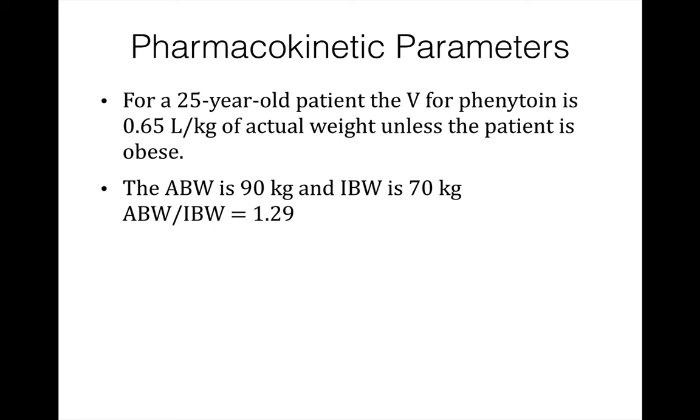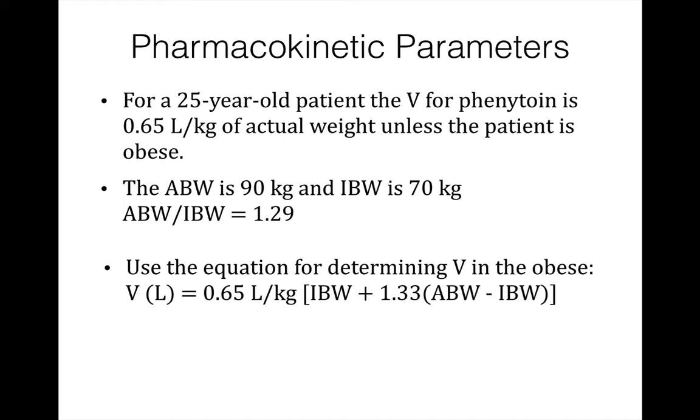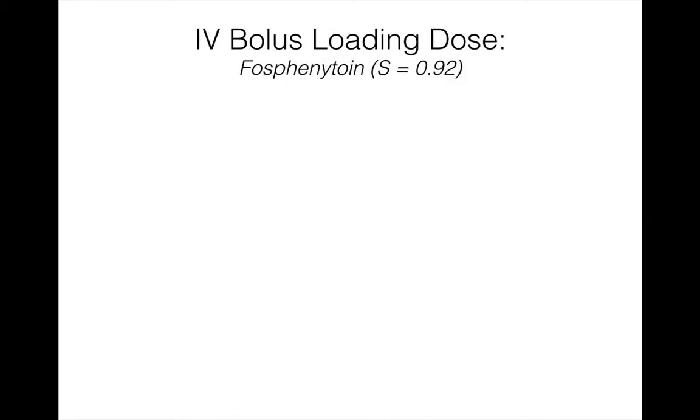His actual body weight is 90 kilograms and his ideal body weight is 70, so the ABW over IBW is 1.29. Because of this, we're going to use an equation for determining volume of distribution in the obese: V in liters equals 0.65 liters per kilogram times ideal body weight plus 1.33 times the difference between actual and ideal body weight. When we plug in the values of his ideal body weight of 70 kilos and the difference between 90 and 70, the volume of distribution is 62.79 liters.